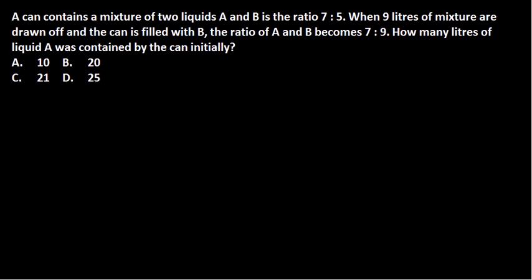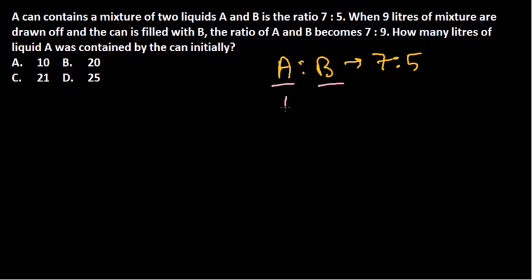The can contains a mixture of two liquids A and B in the ratio 7:5. We don't know the total capacity, so let's assume the can stores 7x liters of liquid A and 5x liters of liquid B. When you have ratios, we multiply by a factor x to get values to work with. So initially, the can contains 7x liters of liquid A and 5x liters of liquid B.